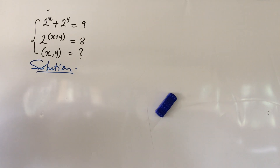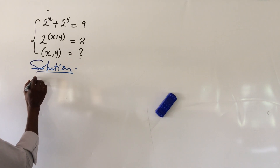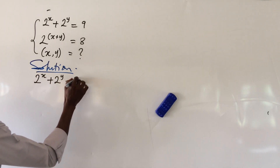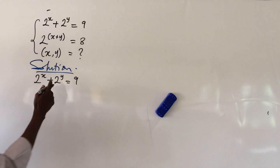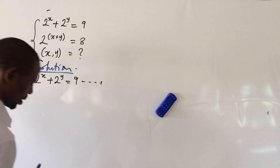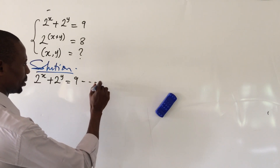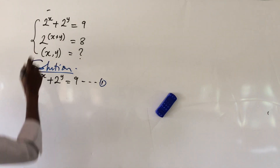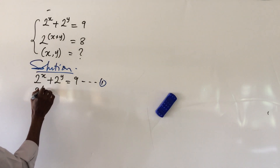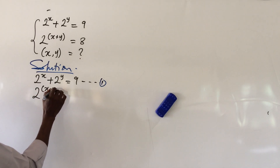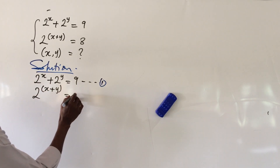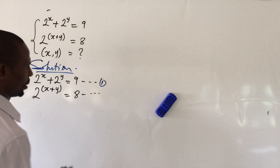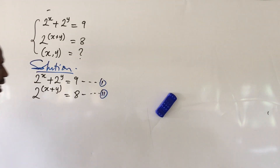Let's put down our equations. For the first one we have: two to the power of x plus two to the power of y equals nine — let's label this equation one. The second one we have: two to the power of bracket x plus y close bracket equals eight — let's label this equation two.